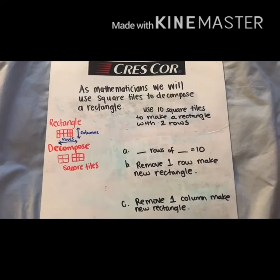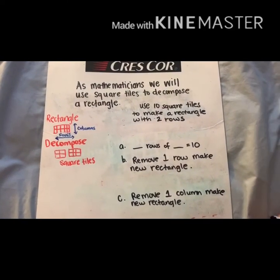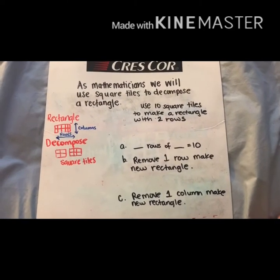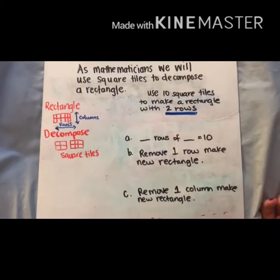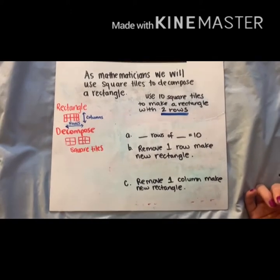So today it's asking us to use ten square tiles to make a rectangle with two rows. So I have to create two rows. So I'm gonna start with my first row and I need ten squares to use.